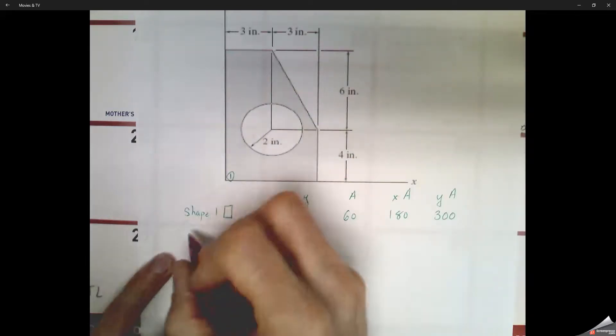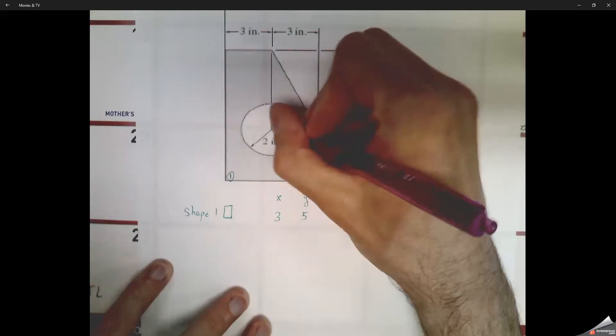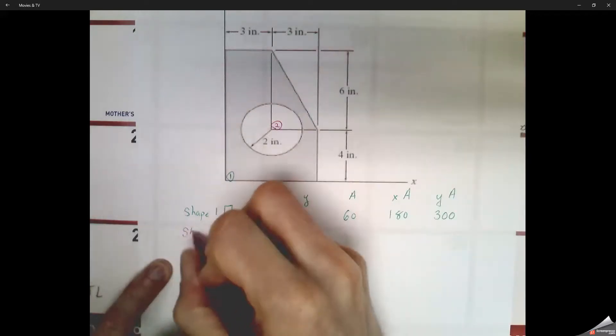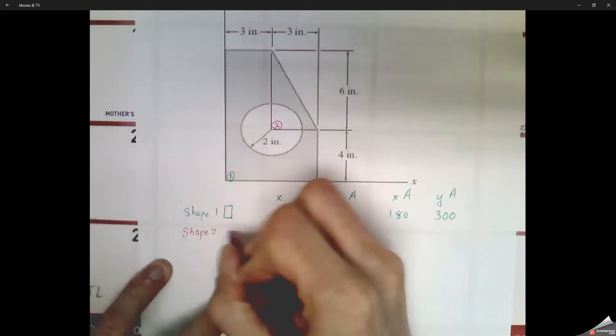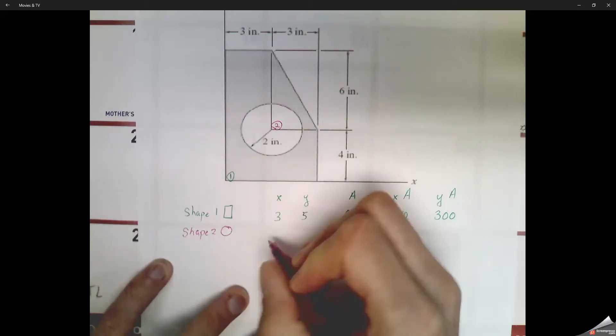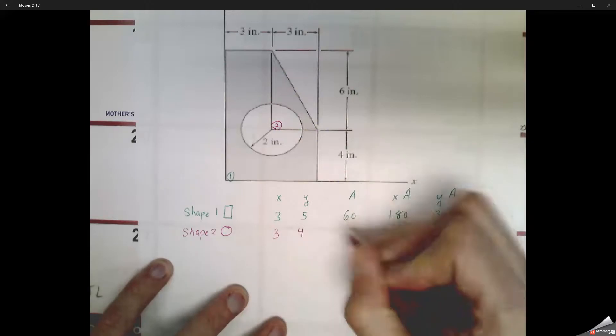The first shape we did is the large rectangle, the 10 by 6 rectangle. Center that over 3, up 5. Area of it is 6 times 10, so 60. 3 times 60 is 180. 5 times 60, 300.